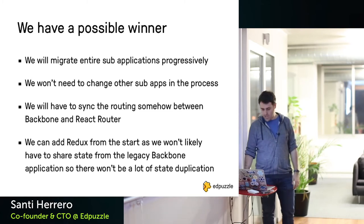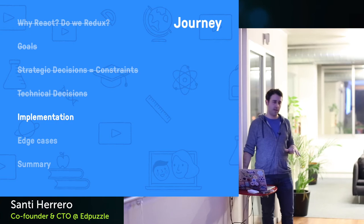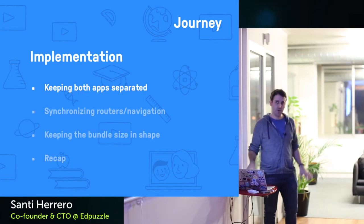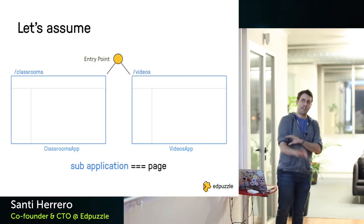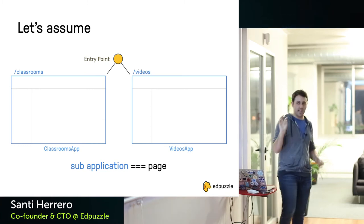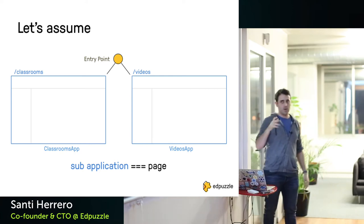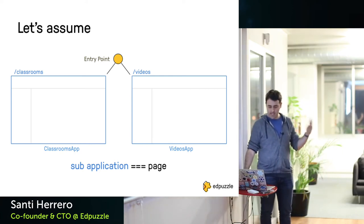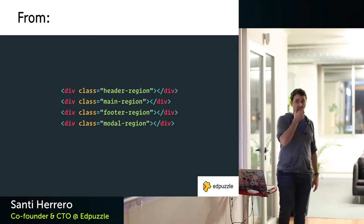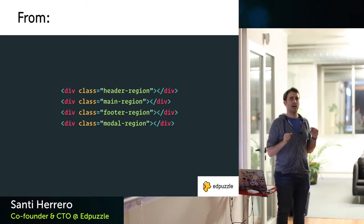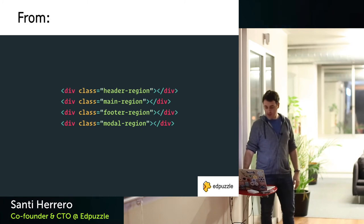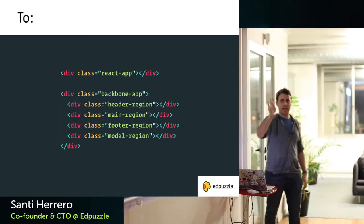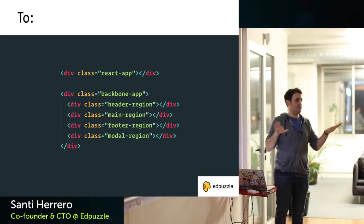Let's dig deep into the code. How do we keep both apps really separated so they don't know about each other? Assuming each application covers the full screen for now: we had some Marionette regions — header, main, footer, and a modal region. We change from that to encapsulating the Backbone app in one container and creating a completely separate new node in the HTML for React.